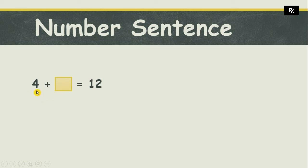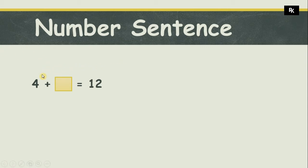Let's have an example. Here I have a number sentence with a missing number: four plus dash is equal to twelve. There must be a number that I have to add to four that will be equal to twelve. To find this missing number, I have to start counting after four.